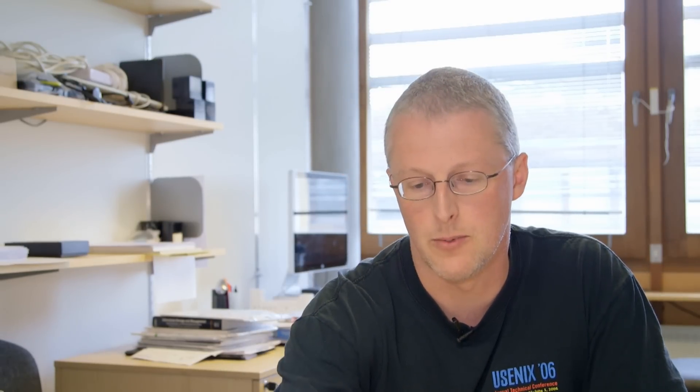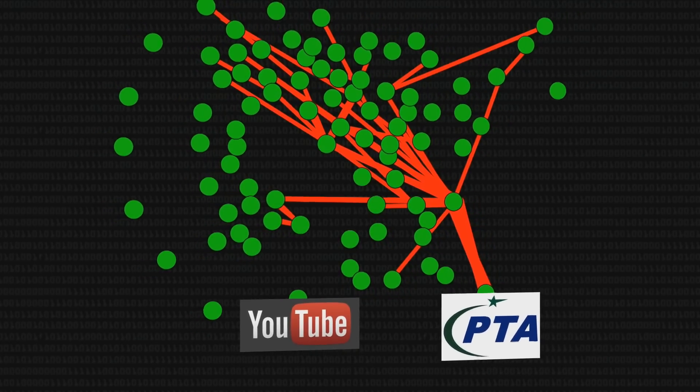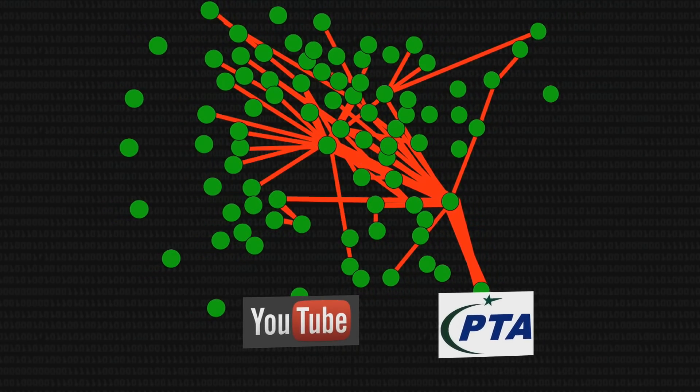Unfortunately those prefixes got advertised through BGP to other networks, and other networks picked them up. Because these are longer prefixes they are preferred over the shorter correct prefix - longest prefix match means you prefer the more specific one. So other networks started sending YouTube-bound traffic to the Pakistan network instead, where it got dropped. This bad information propagated out across the rest of the internet, causing others to also see YouTube as unreachable. It was noticed, the two bad adverts were withdrawn, the original /16 took over again, and YouTube became reachable.